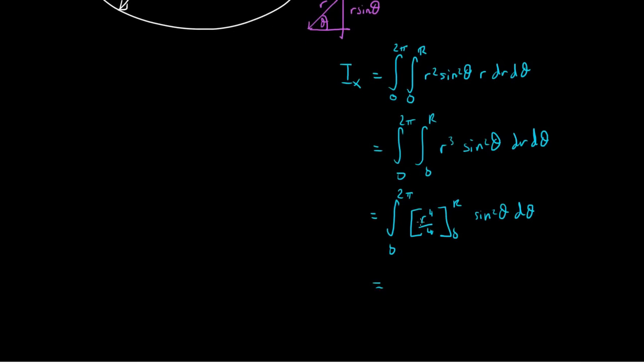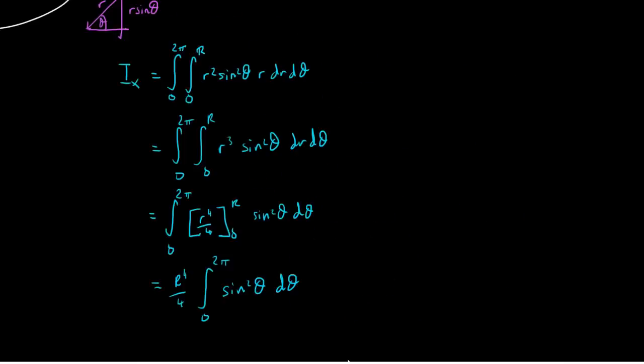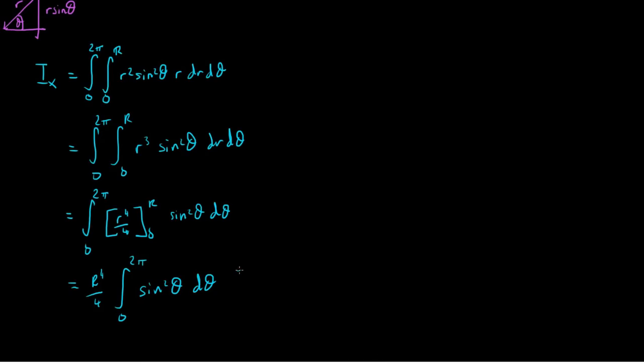So that's equal to, once we substitute r into here, I'm going to pull it out the front as a constant, r to the fourth over 4, times the integral between 0 and 2pi of sin squared theta d theta.